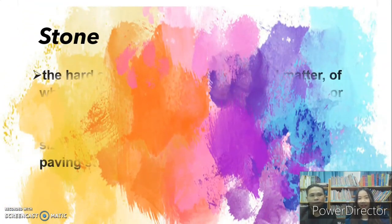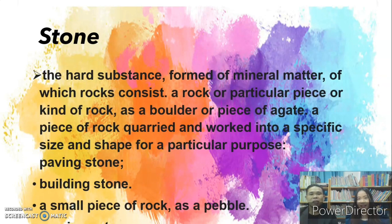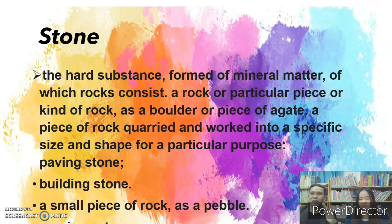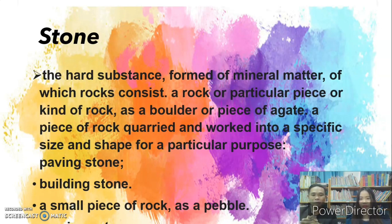So what is stone? Stone is the hard substance formed of mineral matter of which rocks consist — a rock or particular piece or kind of rock, such as a boulder or piece of gate. A piece of rock quarried and worked into a specific size and shape, like angle, triangle, diamond, or oval — for a particular purpose, such as a paving stone or building stone. The last definition is a small piece of rock.